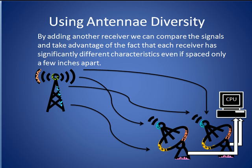Now imagine if a second receiver were added to this system. A computer connected to both receivers can compare the signals received by each and make decisions about which data to keep and which to discard. Even if the receivers and their corresponding antennae are spaced just a few inches apart, the frequency response — meaning which frequencies are received well — at each receiver can be drastically different. Thus, the computer is able to combine the reception from the two receivers based on whichever is doing a better job at each frequency. In addition, through the use of some clever mathematical algorithms, many of the multipath problems described earlier can also be significantly reduced.